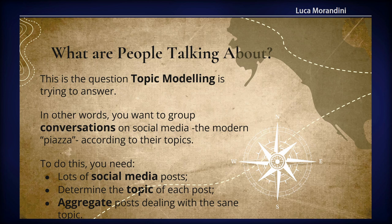Basically, it's about what people are talking about in the social media modern piazza. To do this, we collect many social media posts, then use an algorithm to determine what each post is about, and then we cluster them to determine the topics and the popularity of every topic.